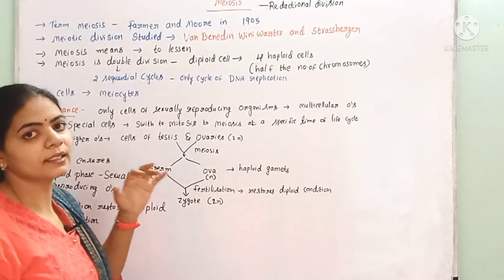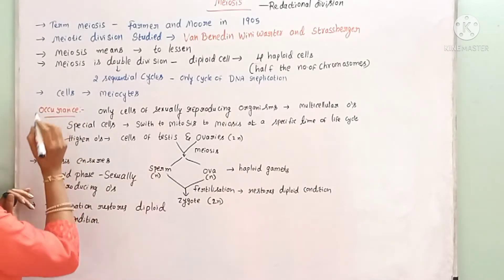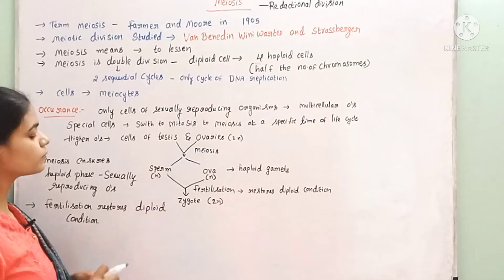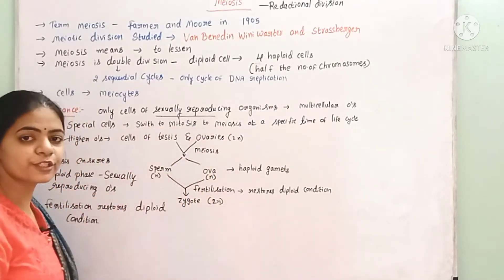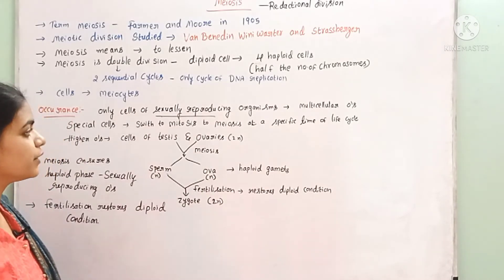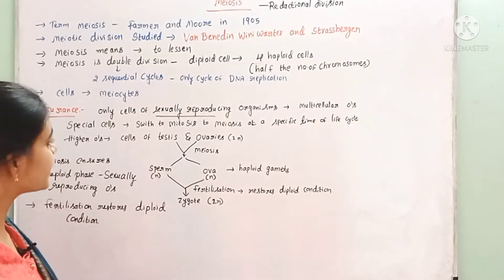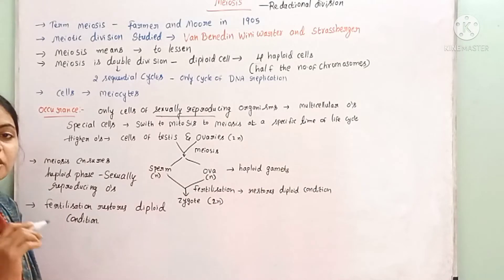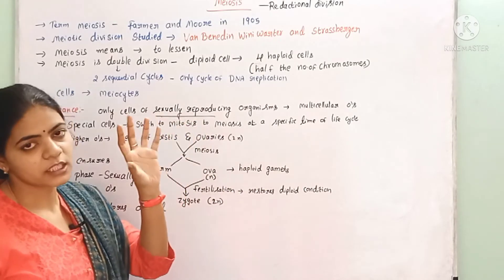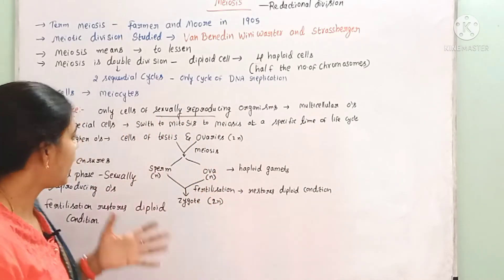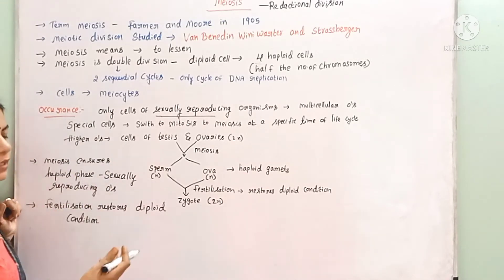What are meiocytes? Meiocytes are cells that participate in the meiosis process. Where does meiosis occur? Meiosis occurs only in cells of sexually reproducing organisms. In multicellular higher organisms, only certain special cells switch from mitosis to the meiosis process at a specific time.